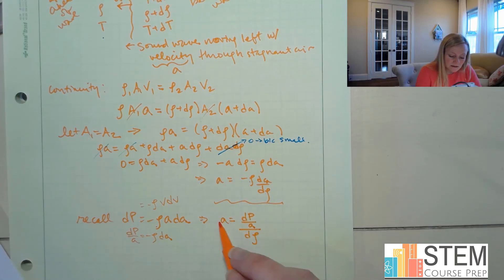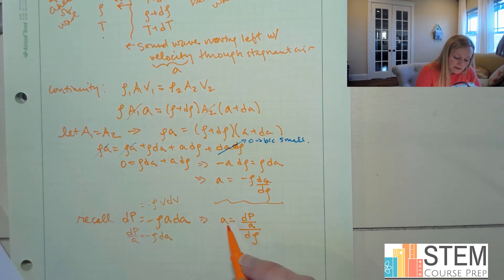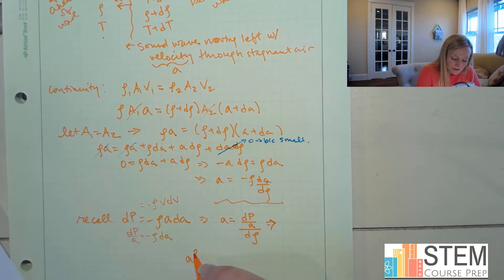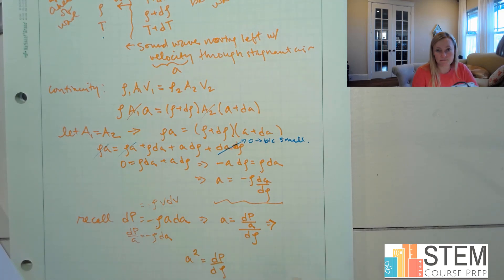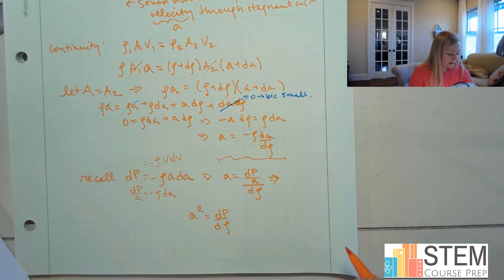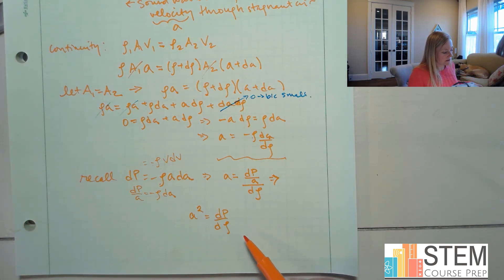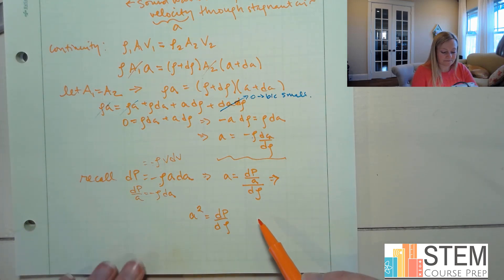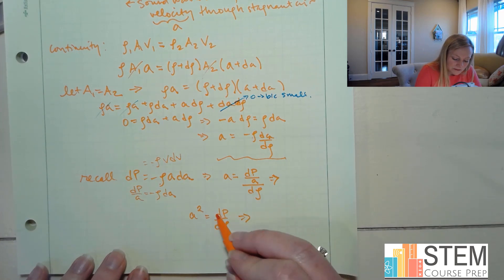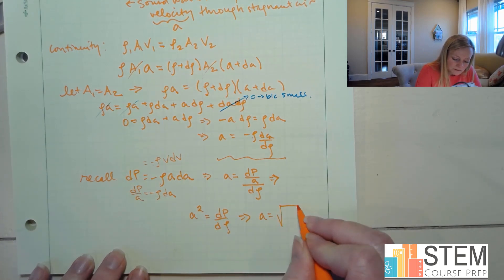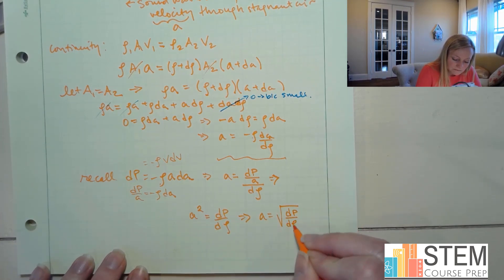Notice I've got -rho*dA in my earlier expression and also -rho*dA in here, so we can make some substitutions. If we replace the -rho*dA with dP/A, then substitute that into the expression A = -rho*dA/d_rho, we get dP/A over d_rho. Bringing the A over to the same side gives us A² = dP/d_rho. Then taking the square root: A = sqrt(dP/d_rho).